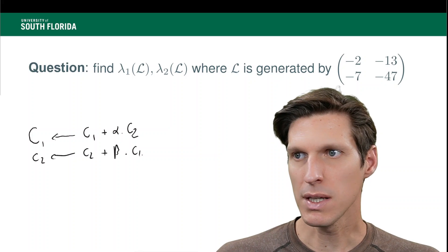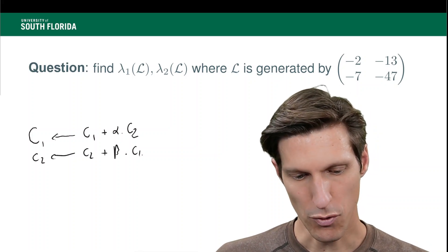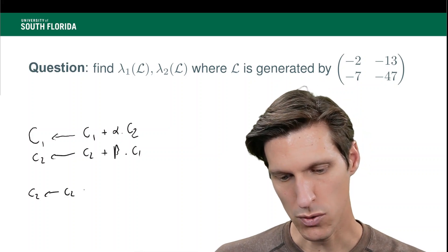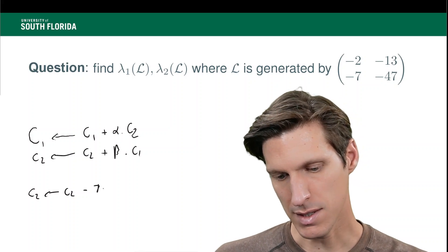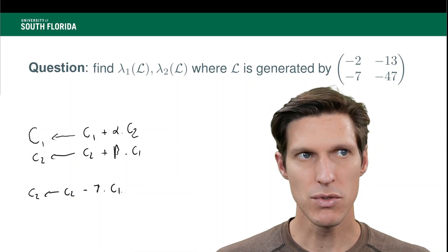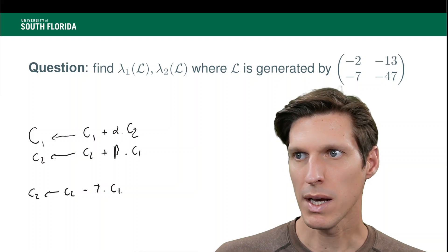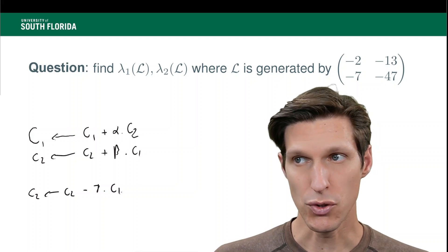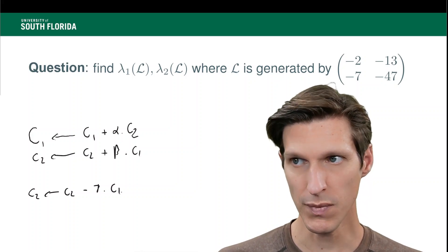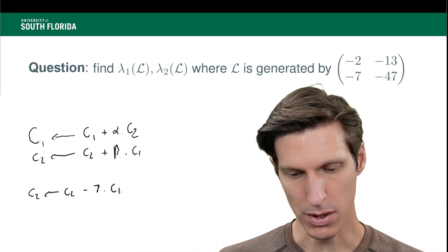For example, here, I'm seeing that performing this operation, C2 is replaced by C2 minus 7 times C1, seems to get me close to reducing the length as much as possible. Because I'm going to have, so 7 times 2 is 14, right? So 14 minus 13 is going to be 1. And then below, 7 by 7 is 49, right? So here's what I get.